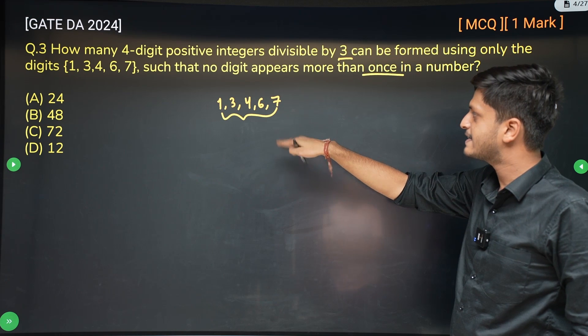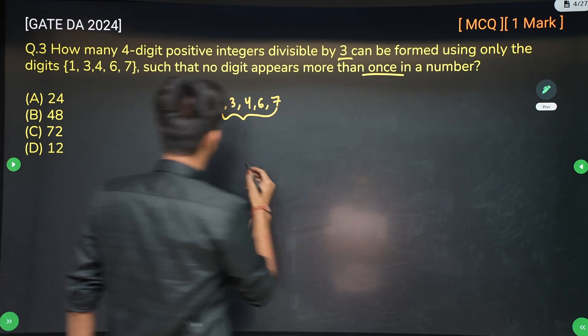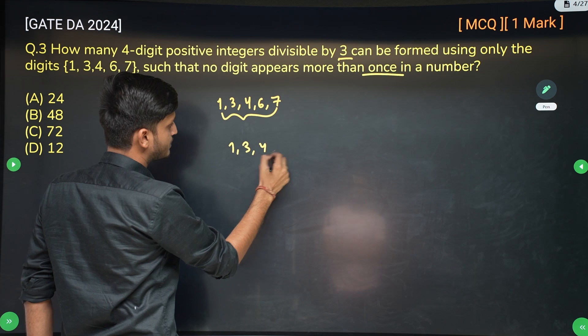So firstly, in how many ways can I select 4 digits out of these 5 digits? 5C4 which is 5. So there are 5 ways. How? I can either select 1, 3, 4, and 6.